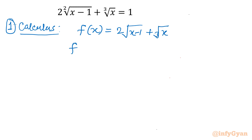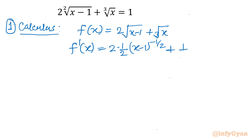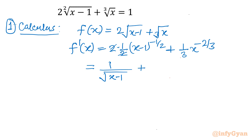Let us take the derivative of that. It will give us 2 times (1/2)(x−1)^(−1/2) plus (1/3)x^(−2/3). So in totality what I am getting is 1/√(x−1) in the denominator plus 1/x^(2/3).